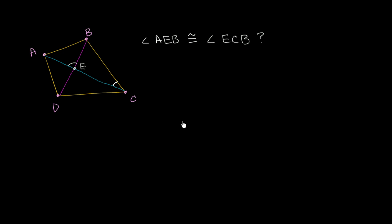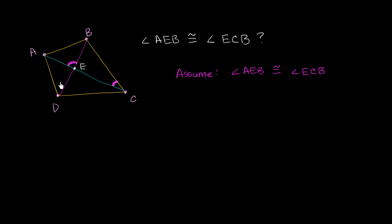Now to think about whether this is possible, let's assume that it is. Let's assume that we do have a quadrilateral where angle AEB is congruent to angle ECB. Now let's try to visualize this whole thing a little bit differently. D, B is a segment, but it's a segment of a larger line. So we could keep extending it off like this, and let's call that larger line line L. D, B is a subset of line L.